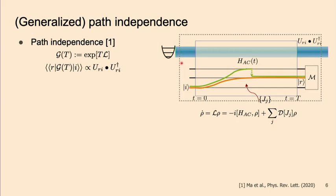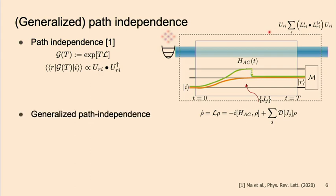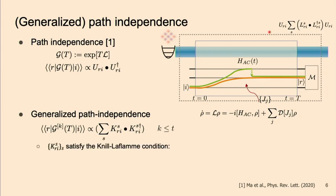Path independence is very hard to implement in practice because of this restriction of no error propagation. Fortunately, we'll show that this property is not exactly what's required for fault tolerance. Suppose your bosonic mode encodes a four-legged cat qubit that can handle some errors. Even if your conditional channel is not a purely unitary channel but instead a unitary channel up to some small correctable errors, this channel is still a correctable channel and you are still fault-tolerant. Based on this idea, we can generalize path independence to the so-called Generalized Path Independence (GPI) control, allowing those conditional channels to have some correctable errors.